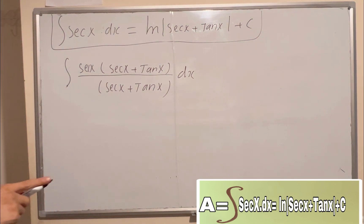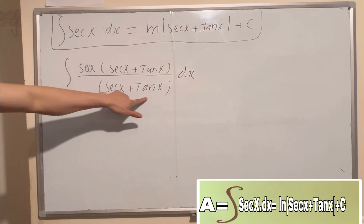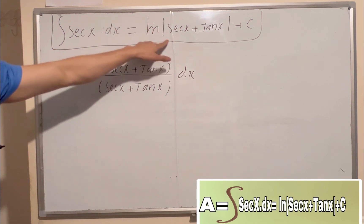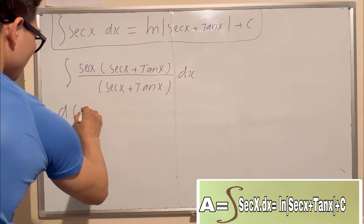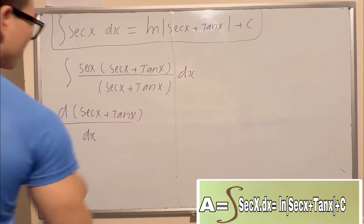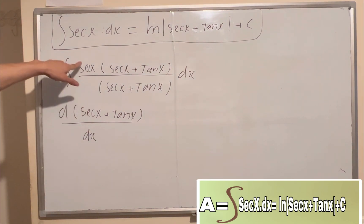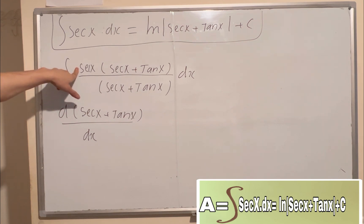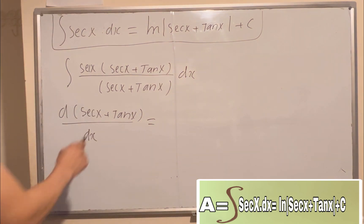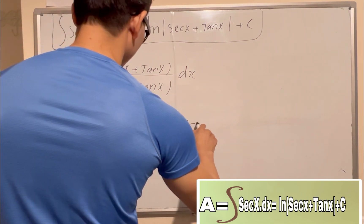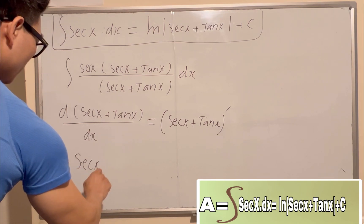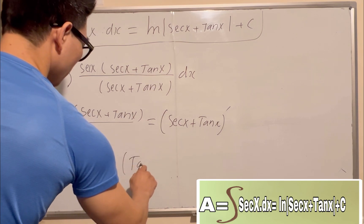So you have to prove that differentiation of the numerator over denominator equals numerator, and then you got that one. So you have to show: do the differentiation of sec(x) plus tan(x). Yeah, when you do differentiation, that one will equal the numerator — meaning this integration will be that one.